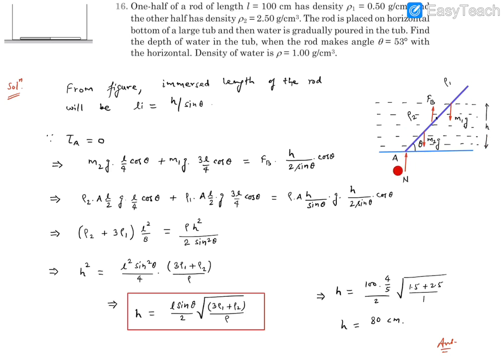So we can have a free body diagram of this rod. You'll find normal reaction will be acting at point A. This half will have mass m₂, so m₂g will be acting at the center of this lower half, and m₁g will be acting at the center of the upper half having density ρ₁.